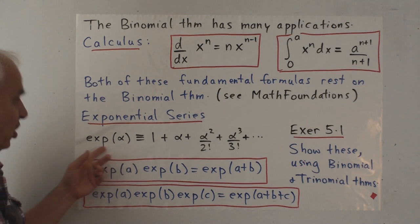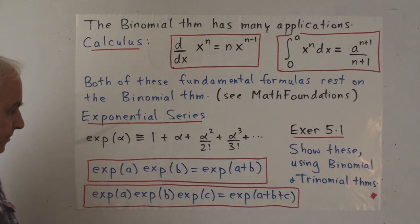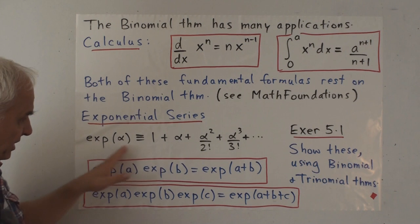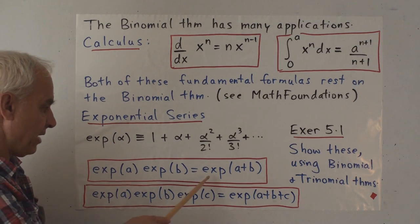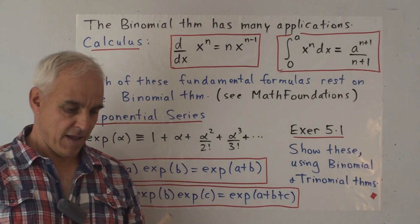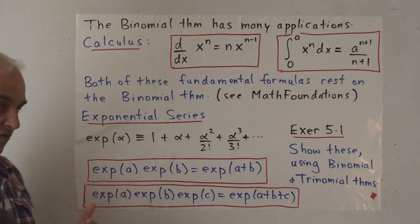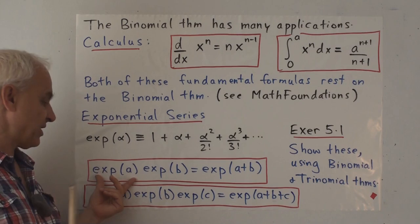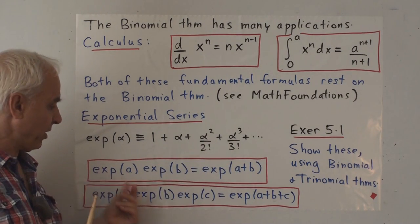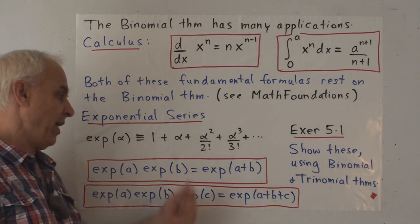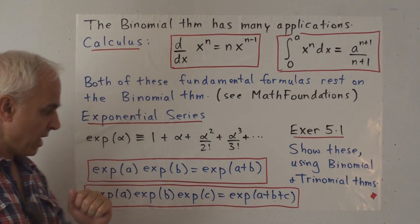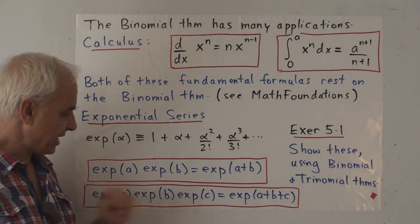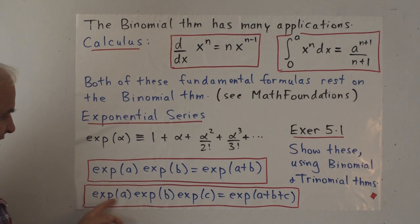So this is 1 plus alpha plus alpha squared over 2 factorial plus alpha cubed over 3 factorial and so on. Some kind of analog of a polynomial in alpha. And this particular series has very important multiplicative property. That exp(a) times exp(b) equals exp(a+b). and you should think of this as being at the level of polynomial arithmetic.